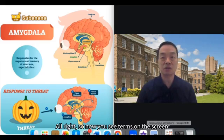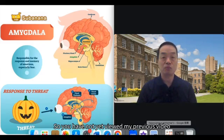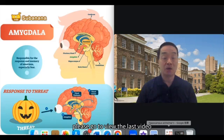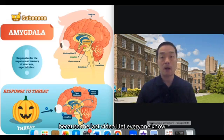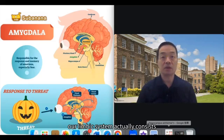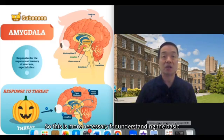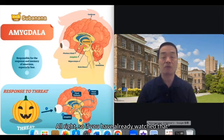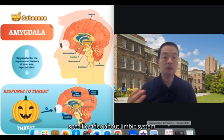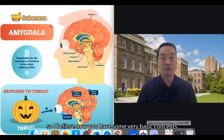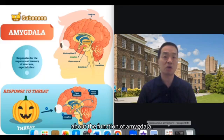Now you see the term on the screen — it's amygdala. If you have not yet viewed my previous video on biological psychology, please go and view it, because in that last video I explained our limbic system. The limbic system actually consists of the amygdala and hippocampus, and I explained some details of the amygdala there. It's necessary to understand the basics before watching this video.